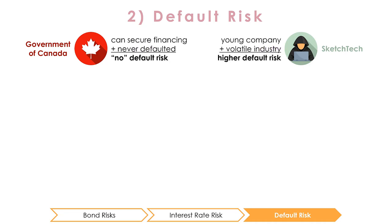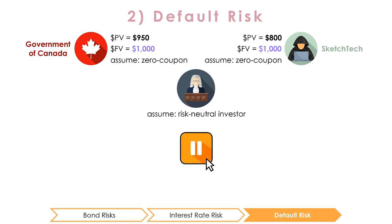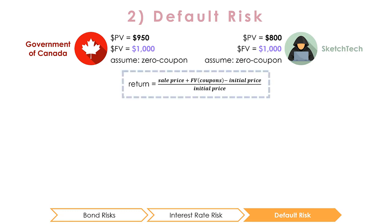However, SketchTech is a young company in a volatile industry and likely has a risk of default. If the $1,000 face value government bonds are trading at $950 and the $1,000 face value SketchTech bonds are trading at $800, what is the default risk on these bonds? Assume that investors are risk neutral, meaning that they are indifferent between investments with the same expected return, regardless of risk. We already know that the government bonds have zero risk of default, so we can use these bonds to determine the return that investors expect to earn: ($1,000 − $950) / $950, which is 5.26%.